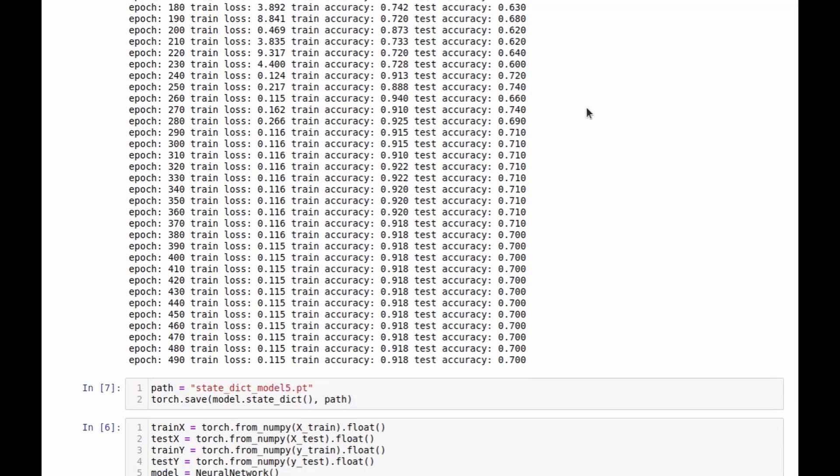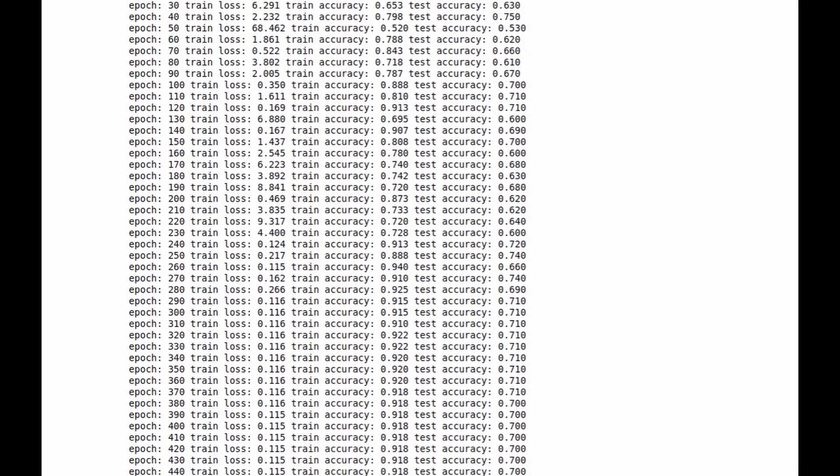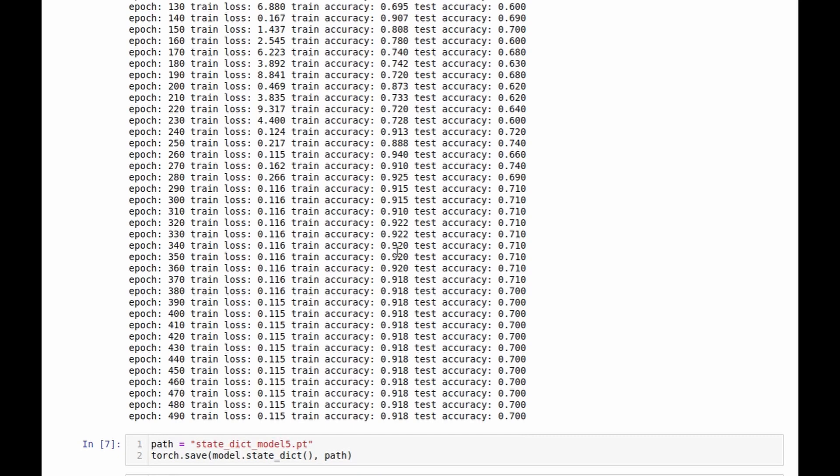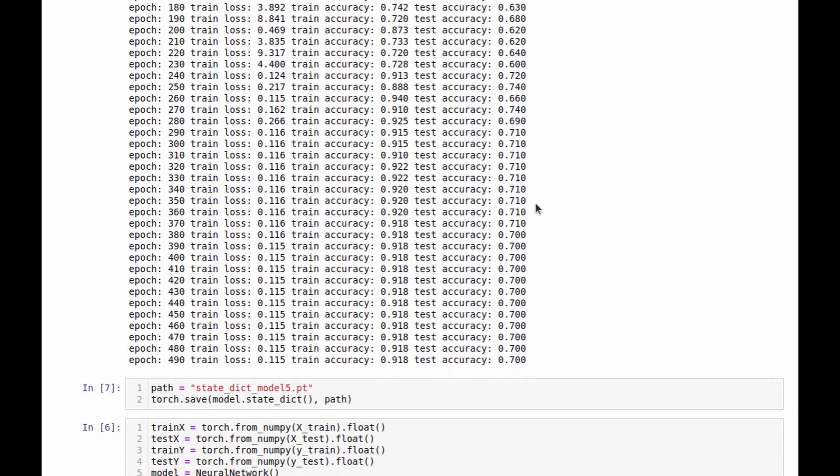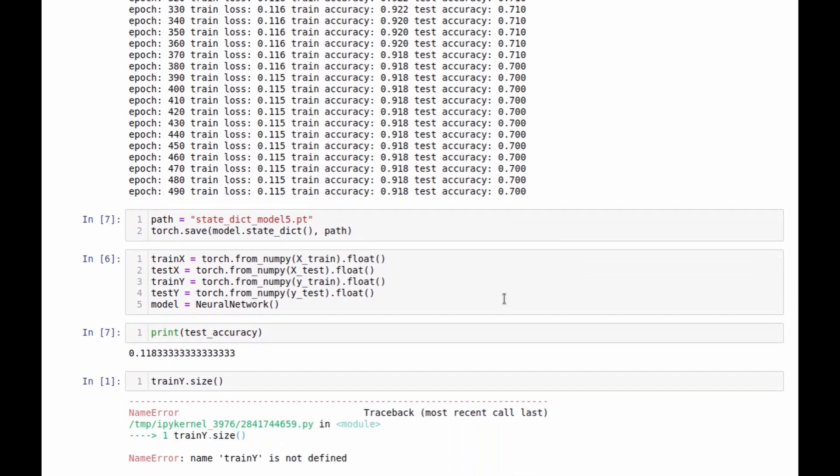And this is the result of the training procedure. As you can see, train loss gradually decreases and then stabilizes. Train accuracy stabilizes at the point of 92%. Test accuracy reaches 70%. And then I save the parameters of the neural network. And actually I've trained five such neural networks, each of them on a slightly differently resampled dataset.